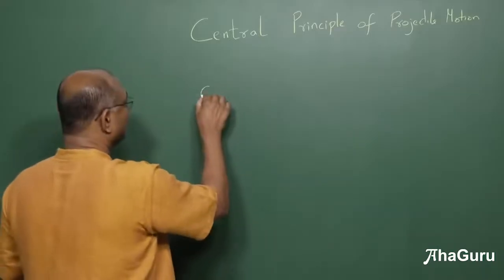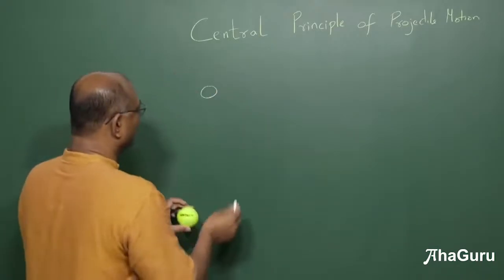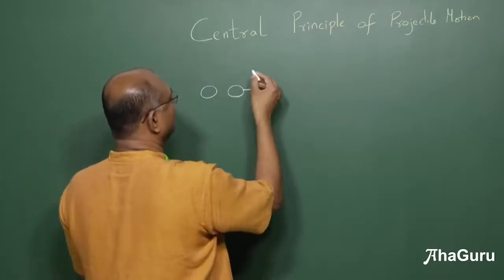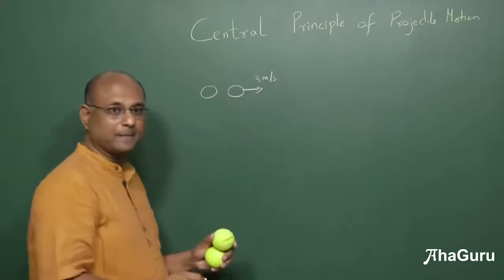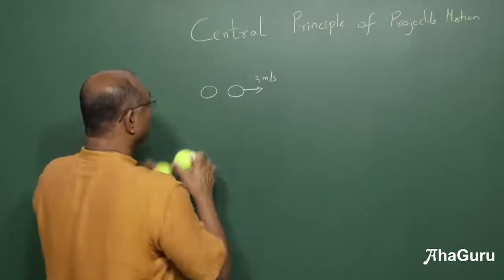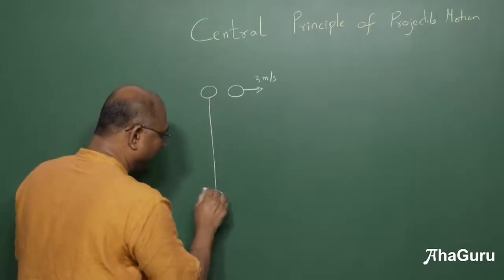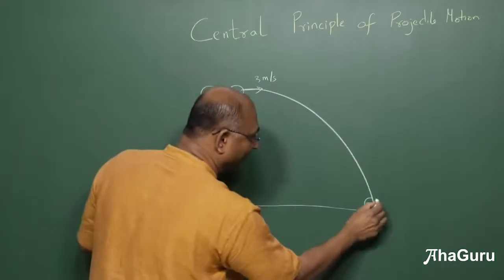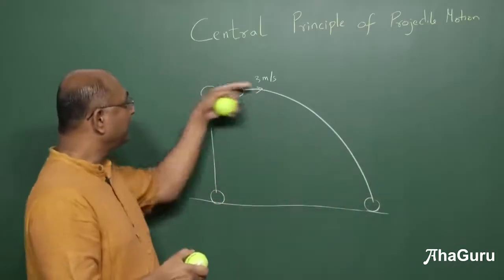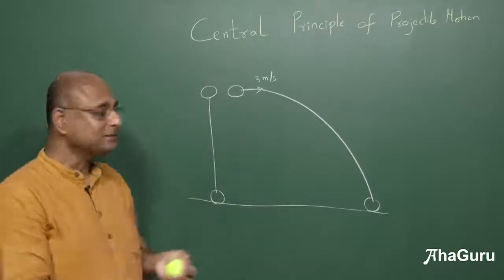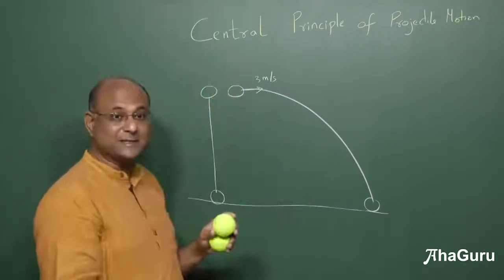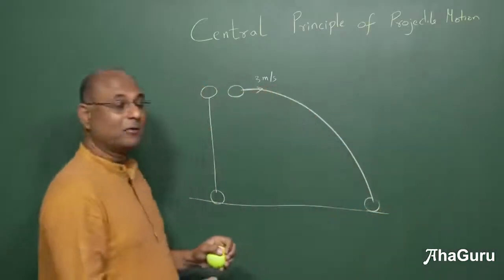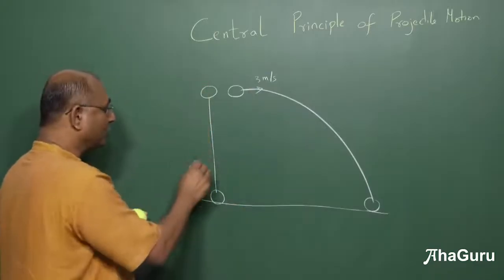I have one ball being dropped and a second ball thrown horizontally with a velocity of, say, three metres per second. It turns out that whatever time the dropped ball takes to reach the ground, the thrown ball takes exactly the same time. I could make the horizontal velocity 13, or even 100 metres per second — it would go very far, but take exactly the same time to hit the ground.